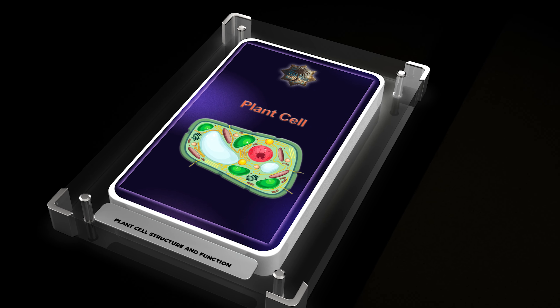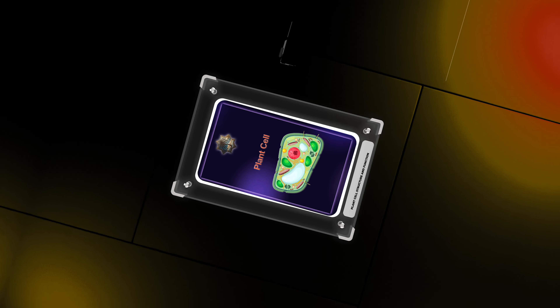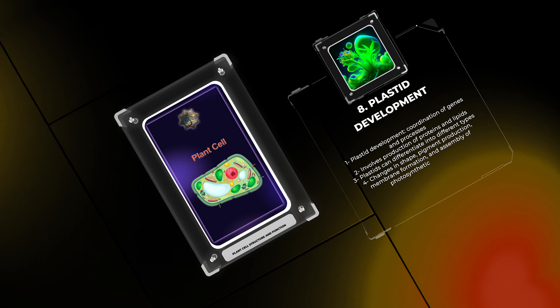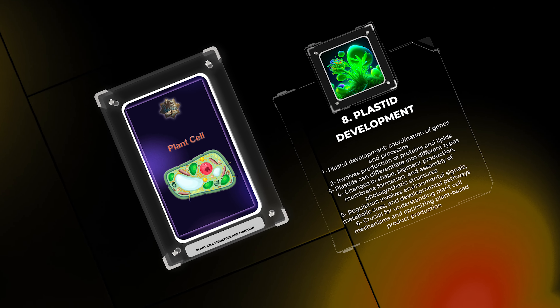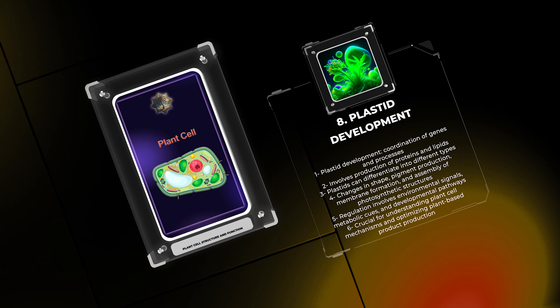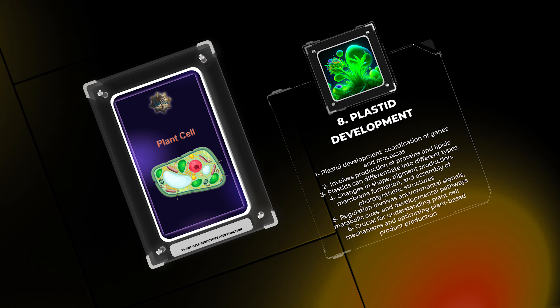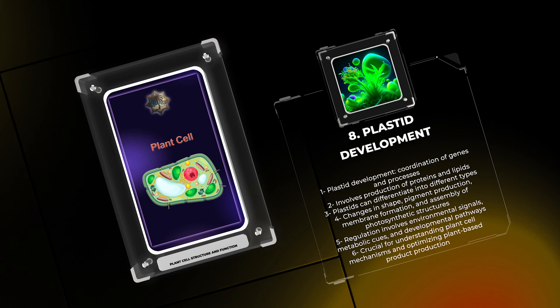Nitrogen is essential for plant growth. Nitrogen fixation is the conversion of atmospheric nitrogen into ammonia in plant cells. Bacteria in nodules on plant roots convert nitrogen into ammonia, which is used by plants to make amino acids and other compounds. This process is important for agriculture and crop development.